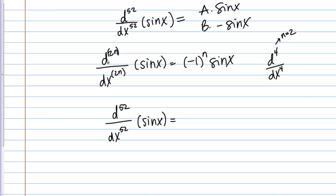I need to figure out, basically, 2N equals 52. I want to know what N needs to be. Then N would be 52 divided by 2, which is 26. In our case then, N equals 26.